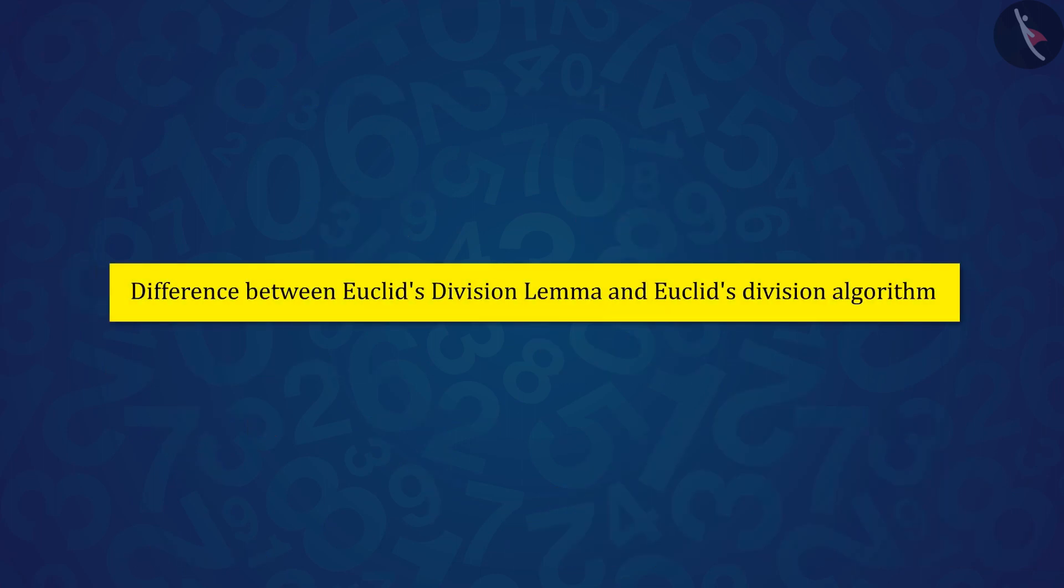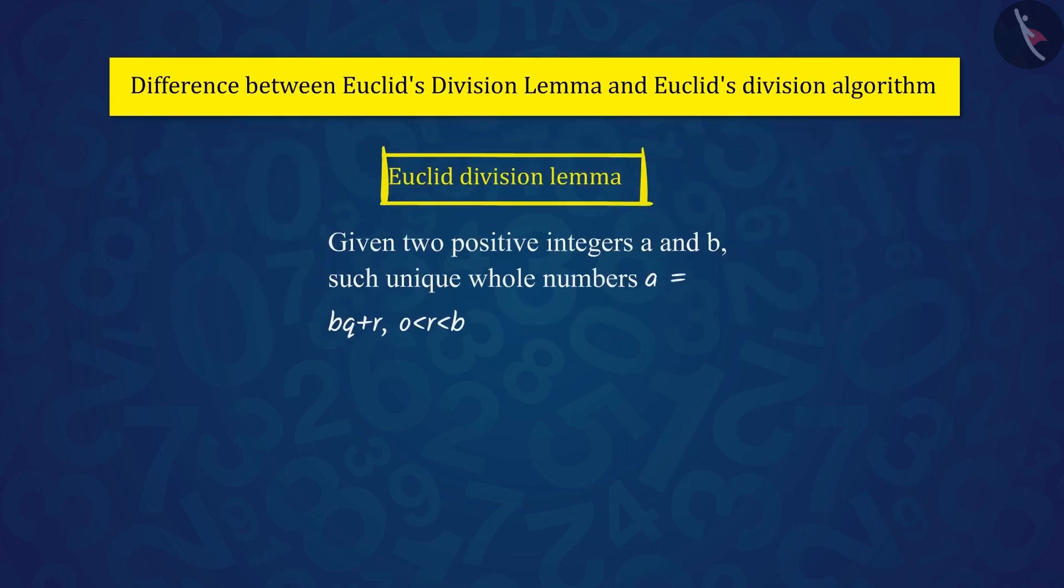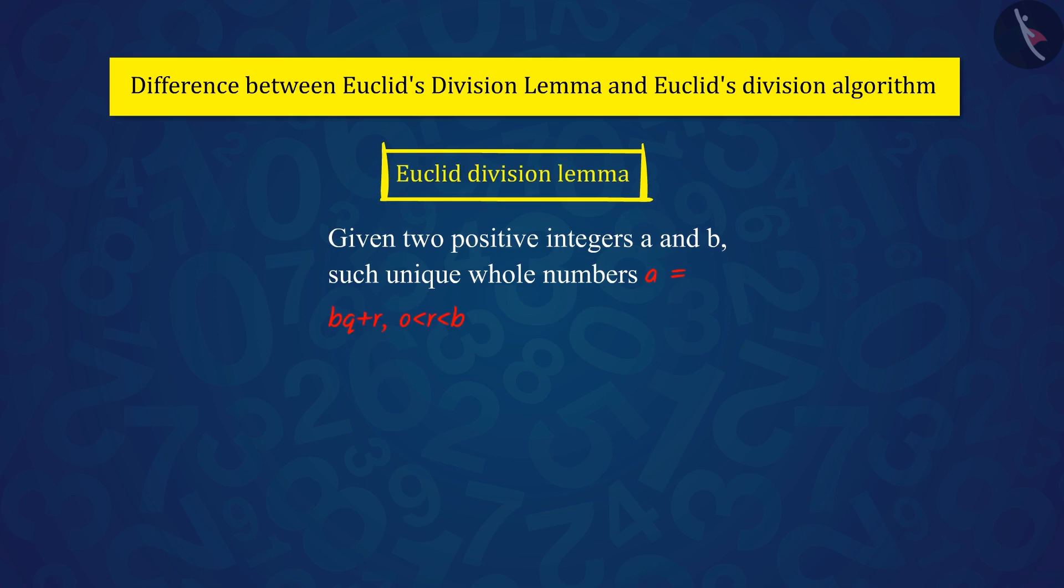Now, let's understand the difference between Euclid's division lemma and Euclid's division algorithm. Euclid's division lemma is a proven statement which is used to prove another statement.